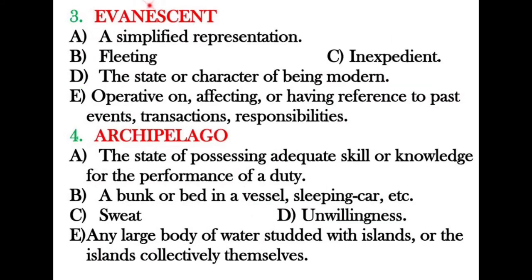The next word is 'evanescent,' from the root 'evade,' a cousin of 'avoid.' It means anything that is hard to grasp or catch hold of. It is an adjective. 'A simplified representation' is a noun and cannot be correct. The correct answer is 'fleeting' — a present-participle-derived adjective meaning the same thing.